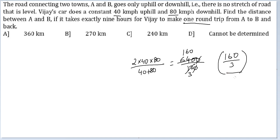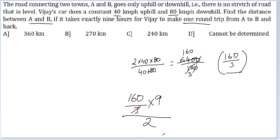The average speed for the entire journey is 160/3. So the total distance traveled is 160/3 × 9 = 480 km. But this is the to-and-fro distance — the distance going forward and the distance going back. We only need the distance between A and B, so we divide by 2. The final answer is 240 km, which is option C.